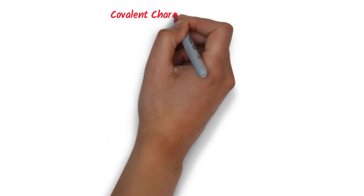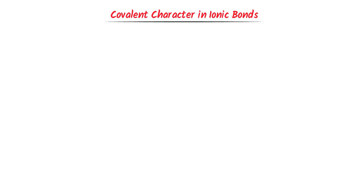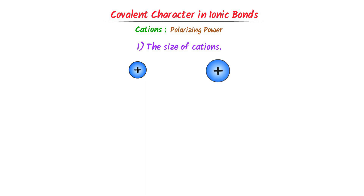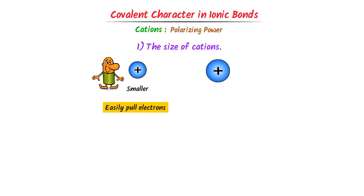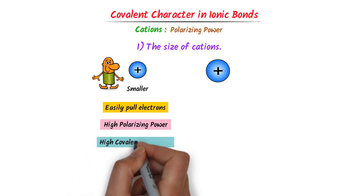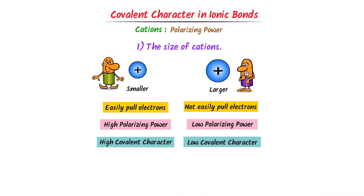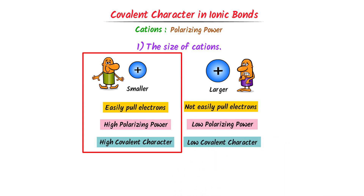Now let me teach you how to determine covalent character in ionic bonds. Firstly, consider cations — they have polarizing power. The first factor affecting covalent character is the size of cations. A smaller cation will easily pull the electrons of the anion, giving it high polarizing power and more covalent character. A larger cation will have difficulty pulling the electrons, giving it low polarizing power and less covalent character. Thus, the smaller the size of the cation, the greater the polarizing power and covalent character.